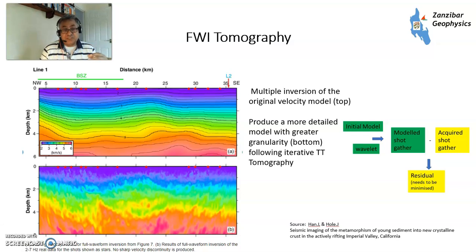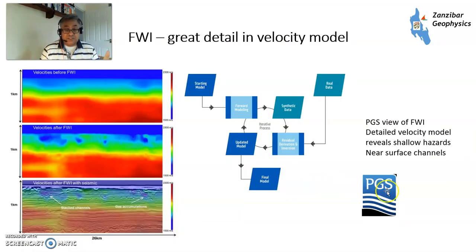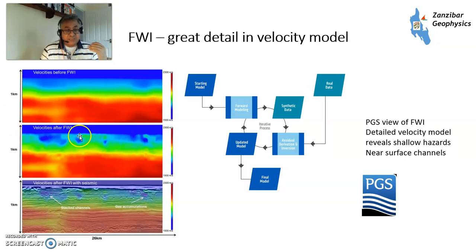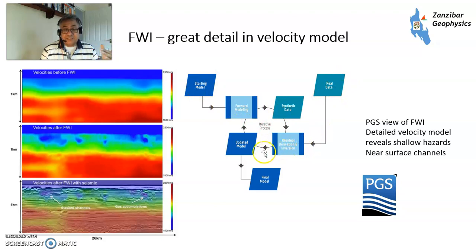This has only really come about in the last six or seven years. The key requirement is long offsets and deep tow to get the extra data needed for the tomography. PGS, a major geophysical contractor, shows on their website velocity models before FWI — relatively simplistic with a little velocity inversion — and after FWI, revealing quite a lot of shallow channels which could be drilling hazards that need to be identified.